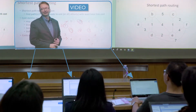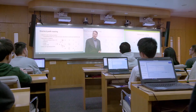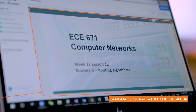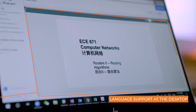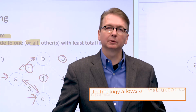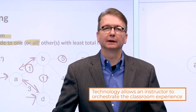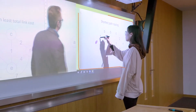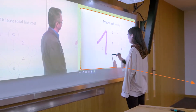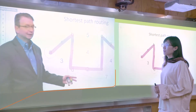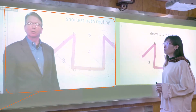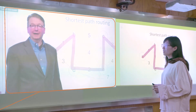The instructor is always visible. So are the slides, both in front of the room and on students' desktops, with language support. Cece, can you come to the board and draw the shortest path? Interactive whiteboards connect everyone electronically. Thank you, that's exactly right. As you can see, the shortest path is not always the least number of hops.